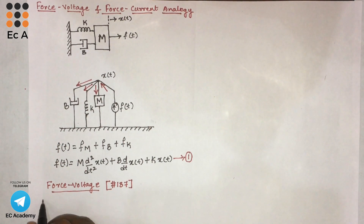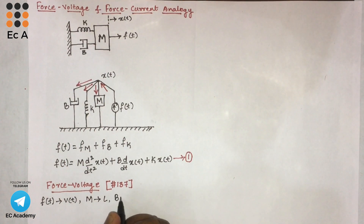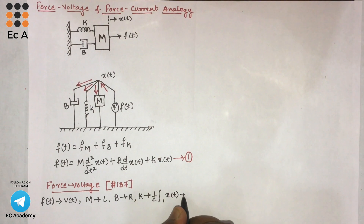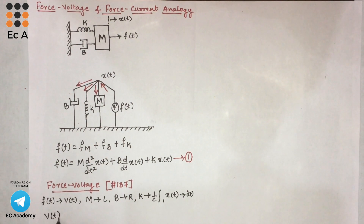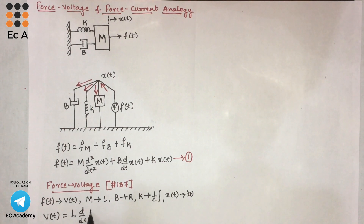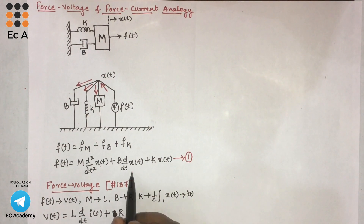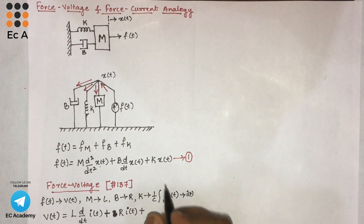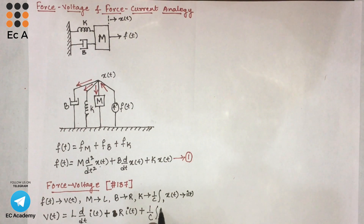In force voltage analogy: f of t is replaced by v of t, m is replaced by L, b is replaced by R, k is replaced by 1/C with integration, and x of t is replaced by i of t. Using this, instead of f of t we write v of t, and the equation becomes: v(t) = L d(i(t))/dt + R·i(t) + (1/C)∫i(t)dt. This is the equation for force voltage analogy.